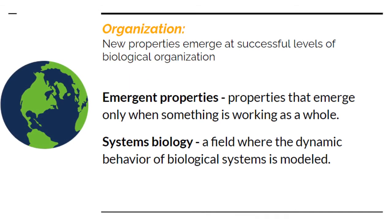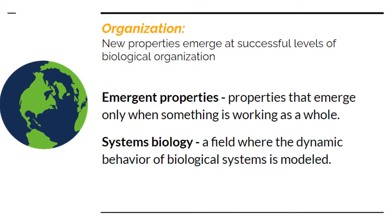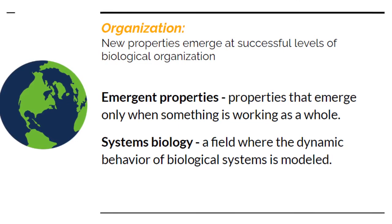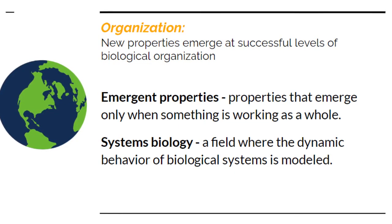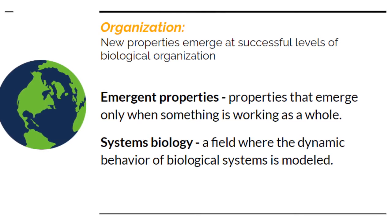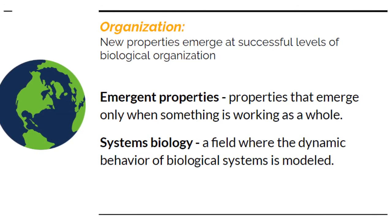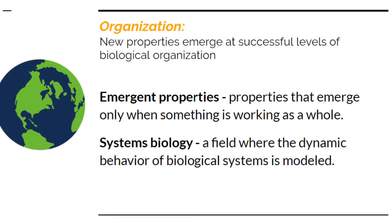The first theme is organization. New properties emerge at successive levels of biological organization. The hierarchy of life unfolds as follows: biosphere, ecosystem, community, population, organism, organ system, organ, tissue, cell, organelle, molecule, and finally, atom. In each of these levels, new properties appear. These are called emergent properties.